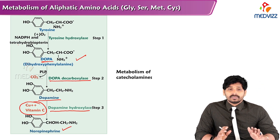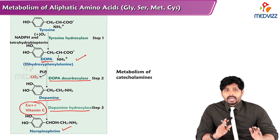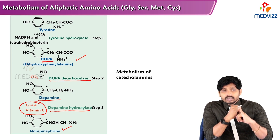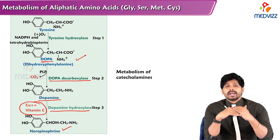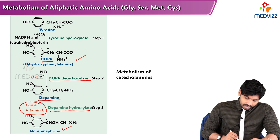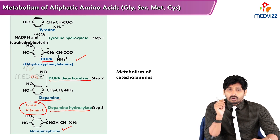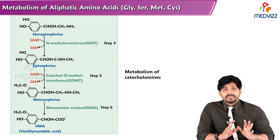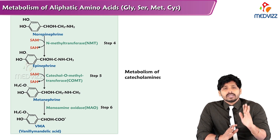Three neurotransmitters are formed in this pathway: dopamine, norepinephrine, and epinephrine. Tyrosine hydroxylase converts tyrosine to DOPA using NADPH and tetrahydrobiopterin. DOPA decarboxylase removes CO2 to form dopamine. Dopamine beta-hydroxylase, which requires copper and vitamin C, converts dopamine to norepinephrine. Norepinephrine is then converted to epinephrine — the difference between them is a methyl group — donated by SAM, S-adenosylmethionine, via the enzyme N-methyltransferase.